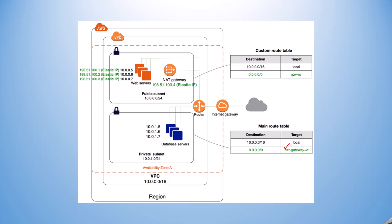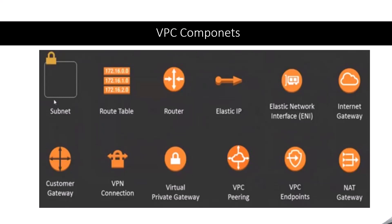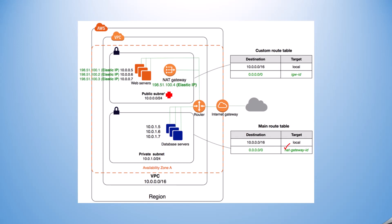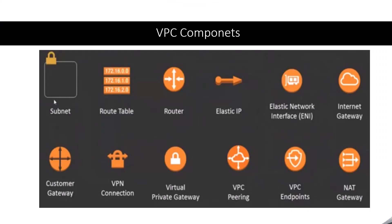VPC peering is useful when you have multiple VPCs — for example in multi-availability zones if you have another private subnet, you can do VPC peering. VPC endpoint is very useful when you do not want to connect via NAT gateway when communicating with S3 storage. You can use the VPC endpoint, which is very reliable and fast. It is a good practice to use VPC endpoints for connectivity with your subnet.